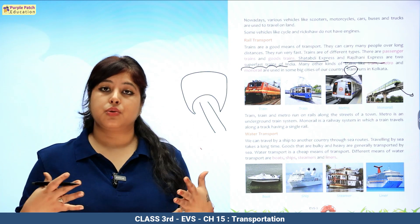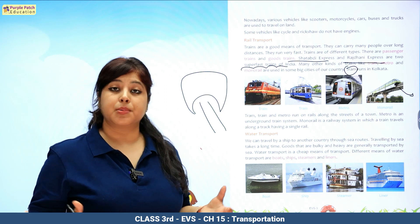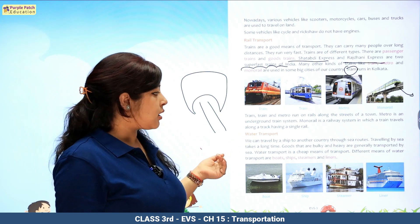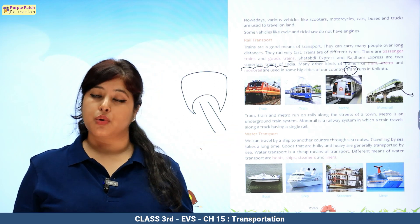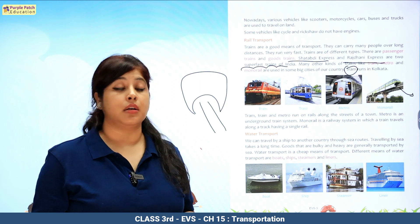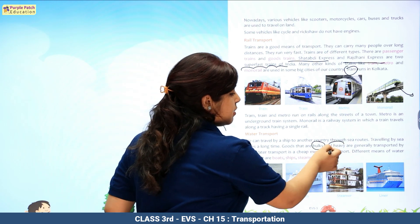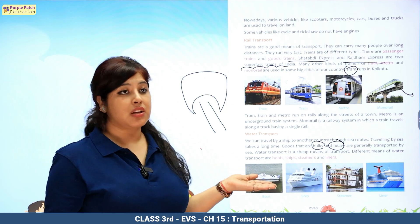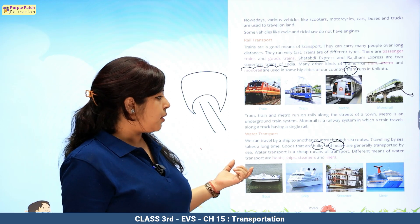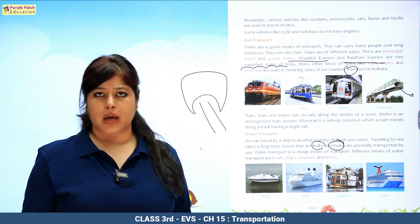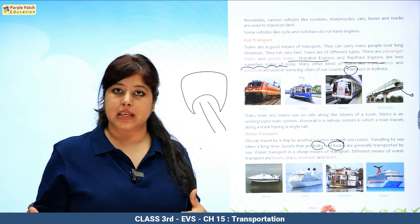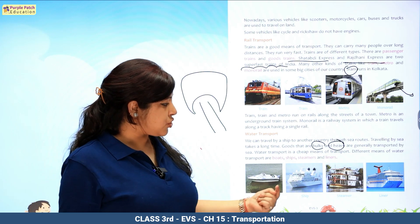Coming on to water transport. Vehicles that sail on water — we can travel by ship to another country. We can go sea route through the samudra. Travelling by sea takes a long time, but goods that are very bulky and heavy are transported by sea. Water transport is quite cheap. Different means of water transport: boat is used in rivers, steamer, and for large water bodies like seas and oceans there are ships or liners in which many passengers travel.